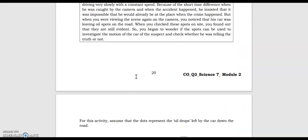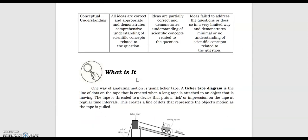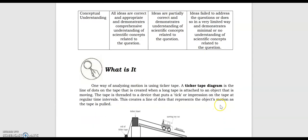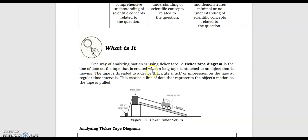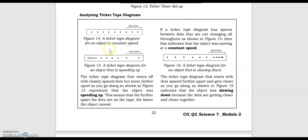Let's go to our discussion. A ticker tape diagram is the line of dots on the tape that is created when a long tape is attached to a moving object. The tape is directed to a device that puts a tick or impression on the tape at regular time intervals. This creates a line of dots that represents the object's motion as the tape is pulled. Looking at Figure 14, this ticker tape diagram represents the movement of an object at a constant speed.